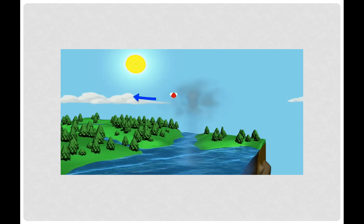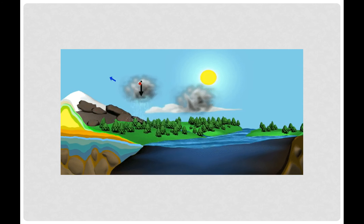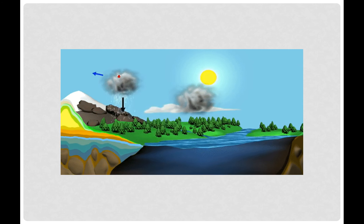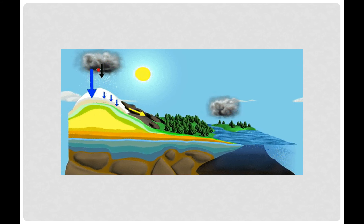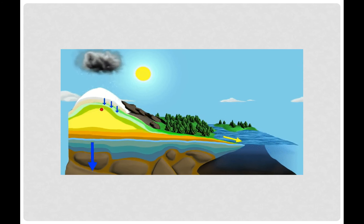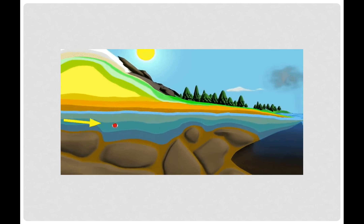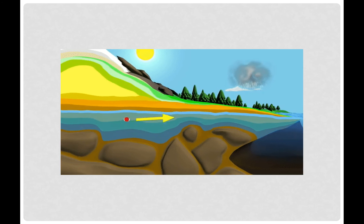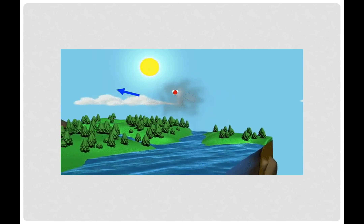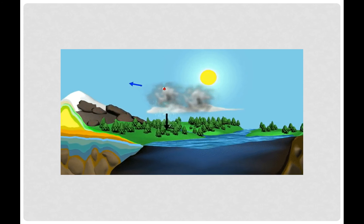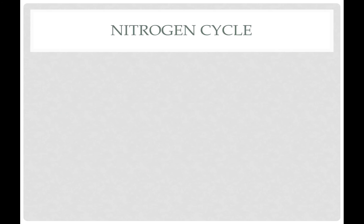So here's our water cycle: evaporation, condensation, precipitation, runoff, percolation if it collects in the ground, and then flows into our bodies of water, and the cycle starts all over again. That's your water cycle — pretty straightforward. Again, you probably remember most of it from middle school.